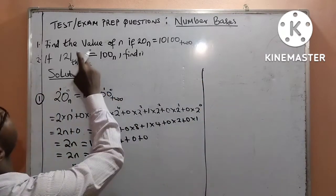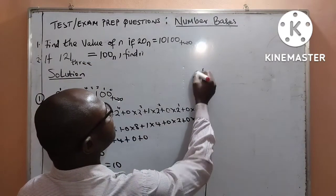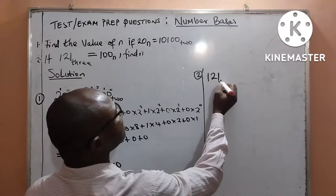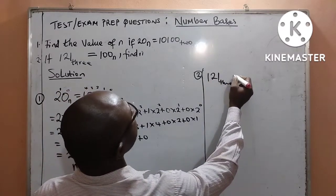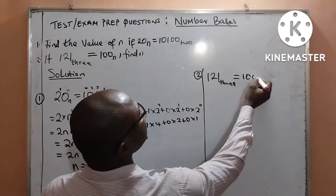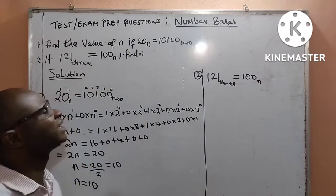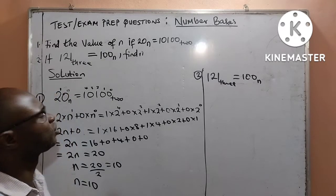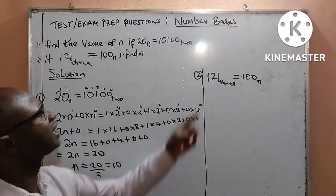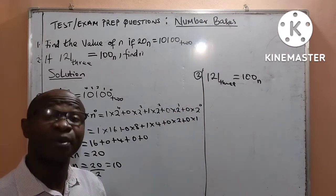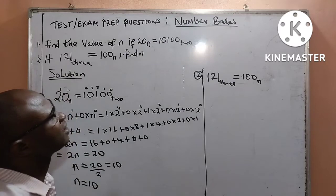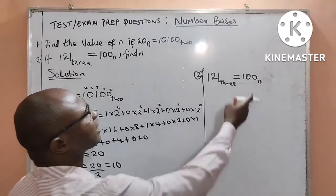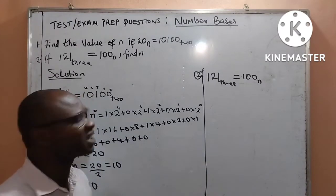Now we take the second question, which is number 2: 121 base 3 is equal to 100 base N. We are also required to find the value of N. We do the same thing we did in number 1 — converting both sides to base 10. So we convert 121 base 3 to base 10, and we also convert 100 base N to base 10.